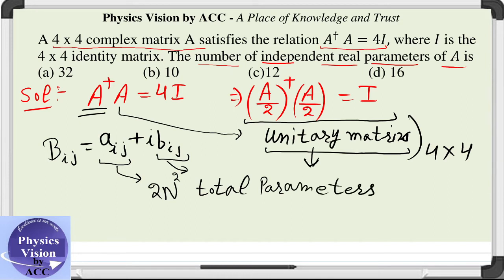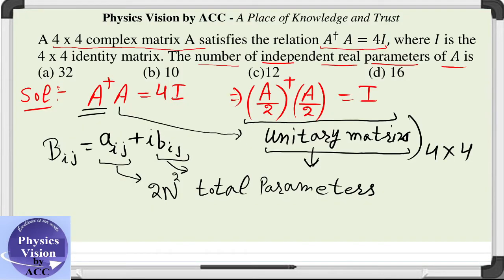We just need to find out the independent parameters. For that, we will make use of this property that B dagger B equals identity matrix. We will make use of this definition of unitary matrix.